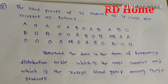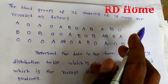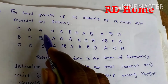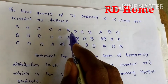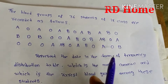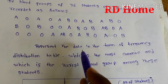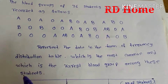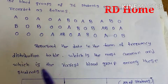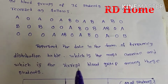Dear students, the question is: the blood groups of 36 students of class 9 are recorded as follows — A, O, A, O, A, B, O, A, B, and so on up to B, recorded for 36 students. We have to represent the data in the form of a frequency distribution table, identify which is the most common blood group, and which is the rarest blood group among these students.